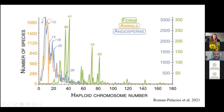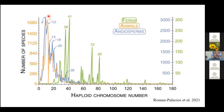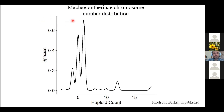This figure from Roman Palacios et al. shows the distribution of haploid chromosome numbers in three major clades of eukaryotes: ferns, animals, and angiosperms. Animals and angiosperms share a similar distribution, with the vast majority of species centered around nine to twelve. In contrast, the Macarantherinae are entirely centered around chromosome numbers of six, five, and four—unusually low for angiosperms.